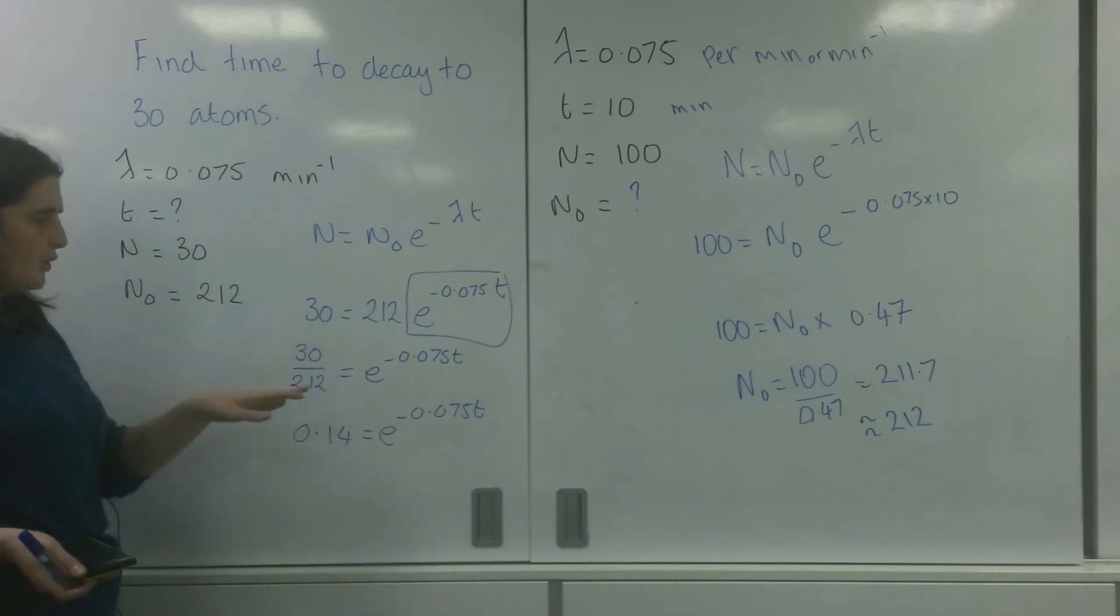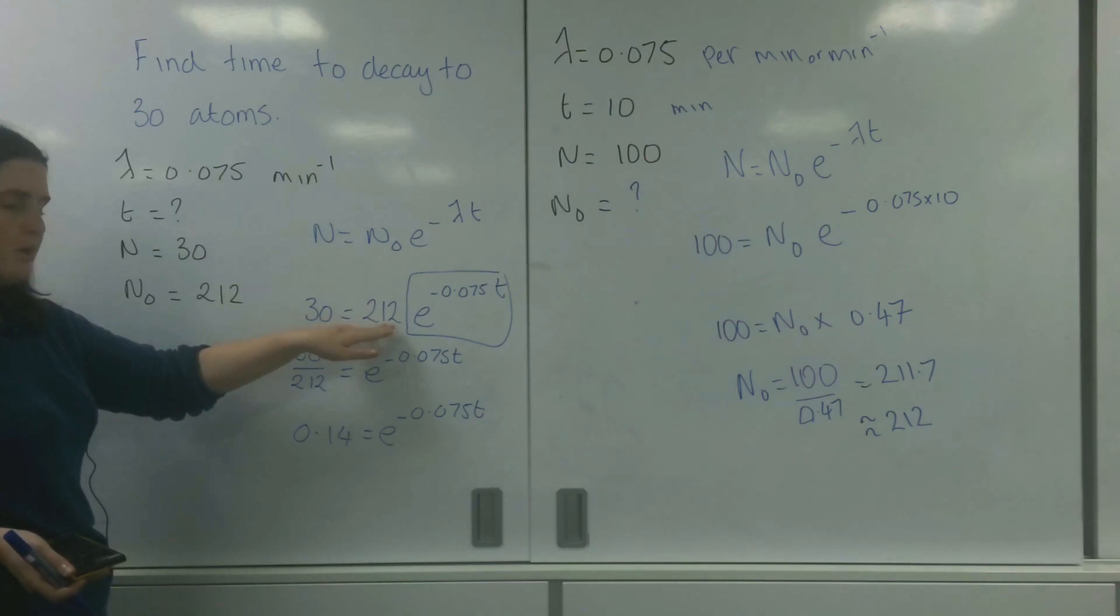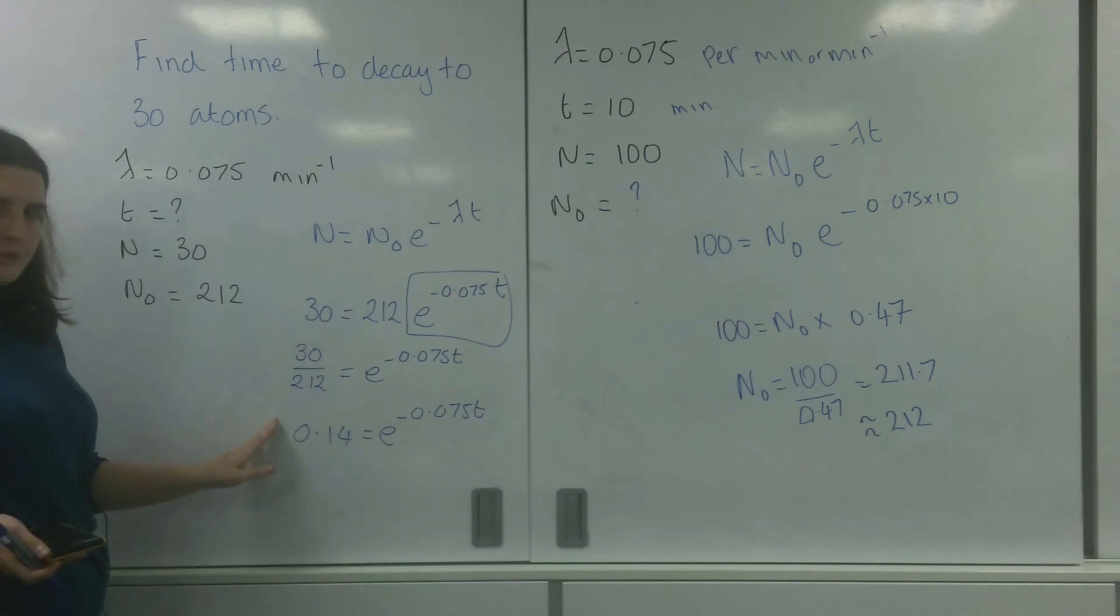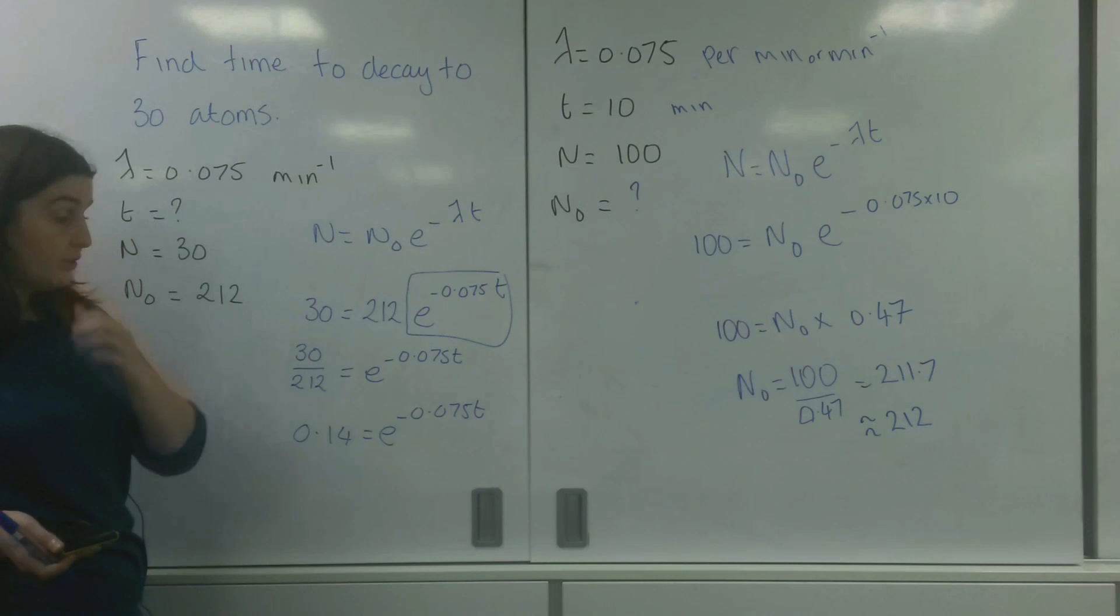this is undoing. It's kind of like how you, here I undid the multiply by dividing. I'm undoing this E by using logarithms. I'm going to be using a log to the base E, also known as ln.